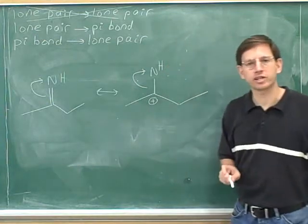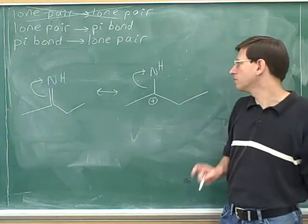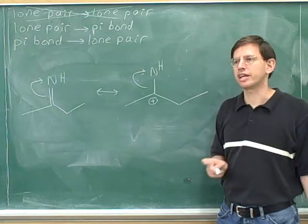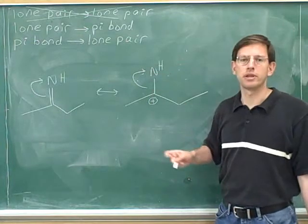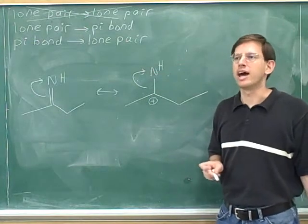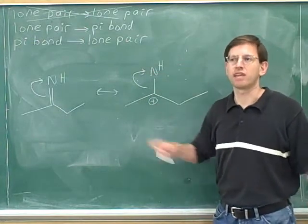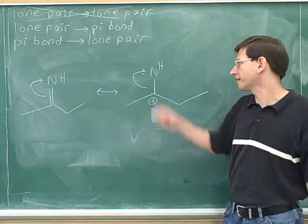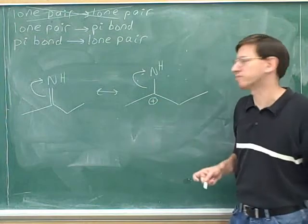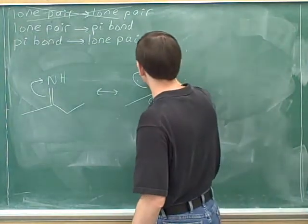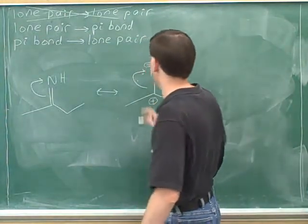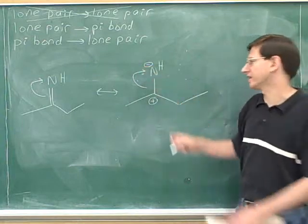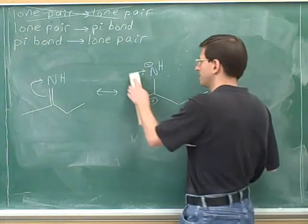Where are the electrons going to? The head of the arrow is on this nitrogen, so the electrons are going to a lone pair. Conventionally we usually don't draw the lone pair, so I'm not going to bother drawing it. However, I do have to show that this nitrogen, since it gained the lone pair, is now more negative than it used to be.